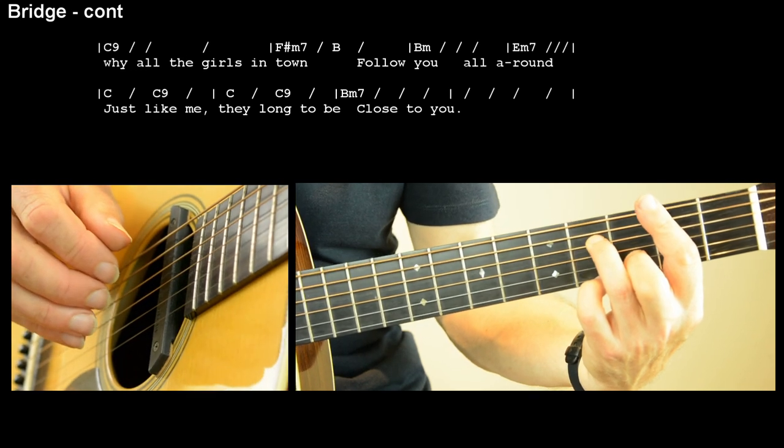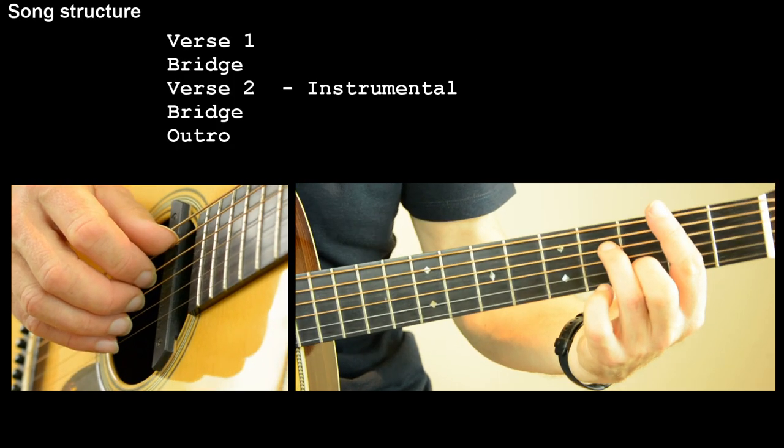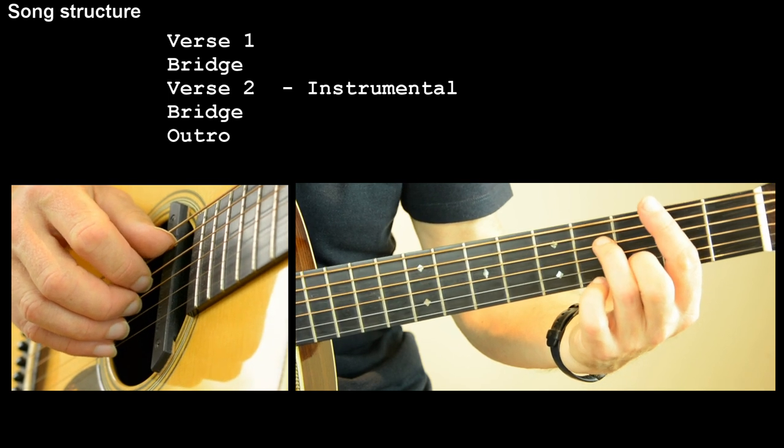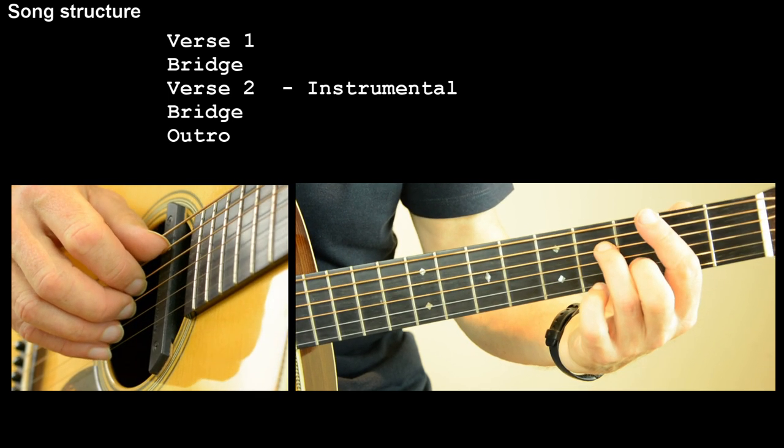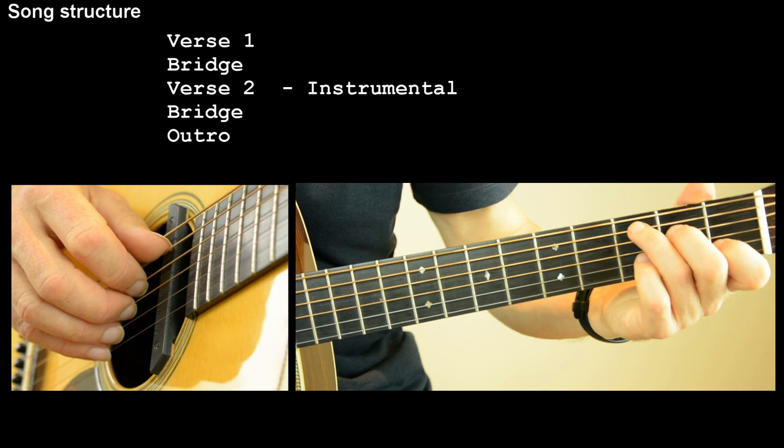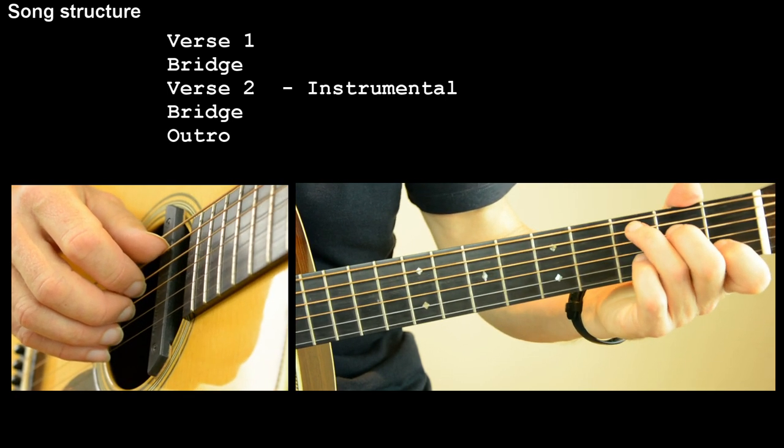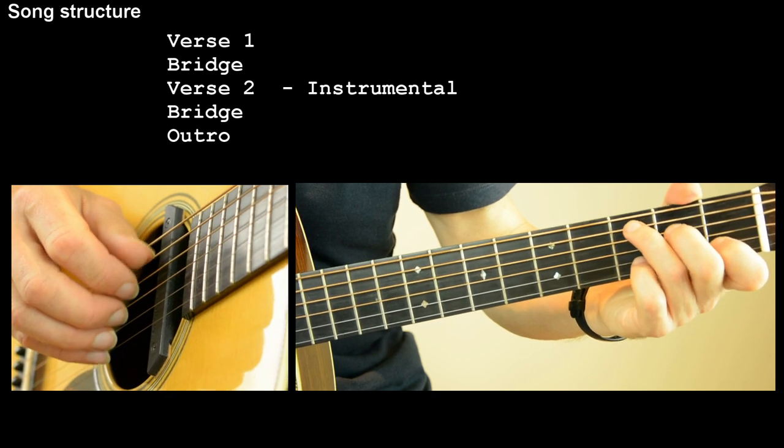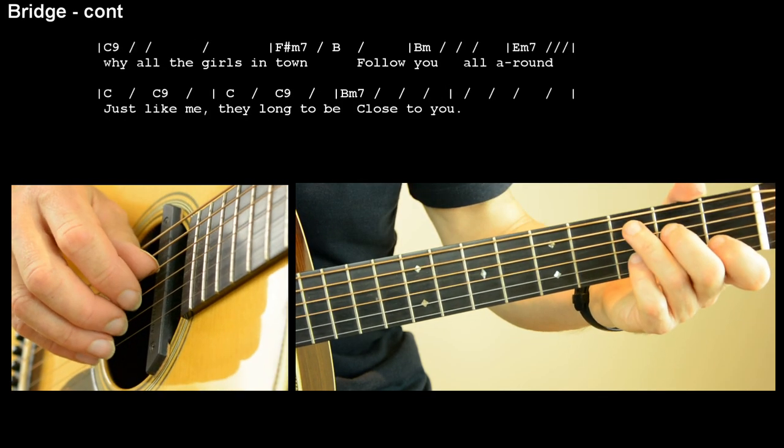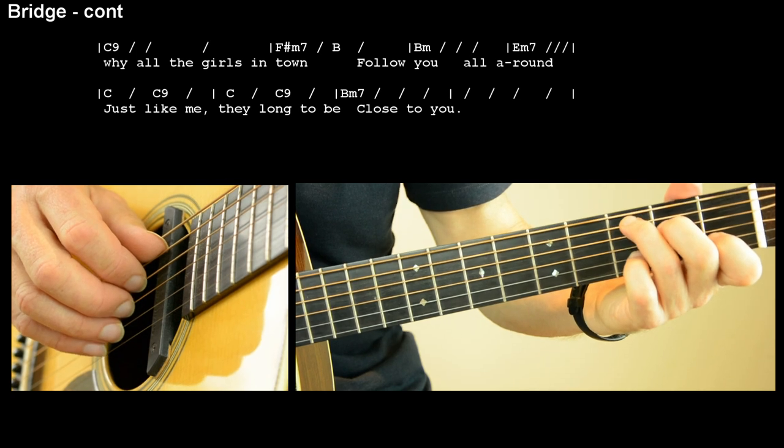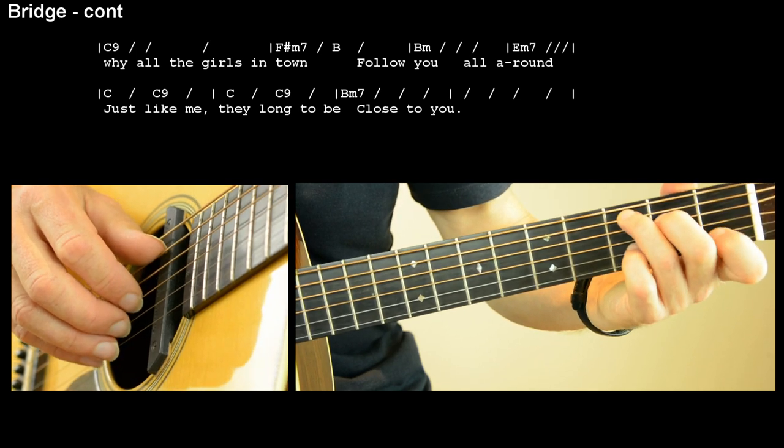So we've pretty well got there now so that was the first verse and the bridge that's followed by if you're doing a vocal version of that you'll have sung all the way through there. There's then a verse of instrumental and then we come back to singing the bridge again so the bridge actually finishes with just like me they long to be close to you so it's the.